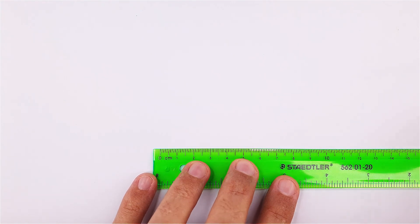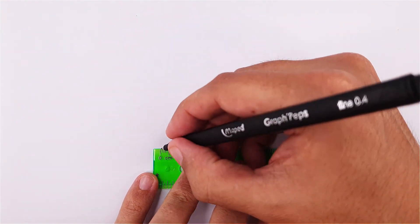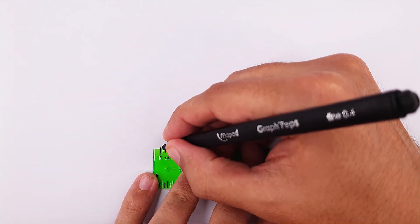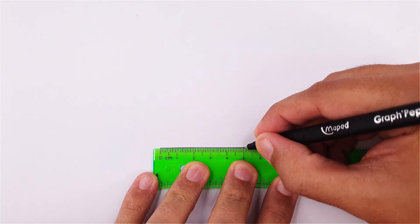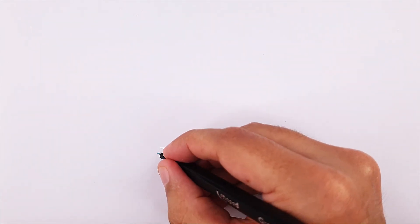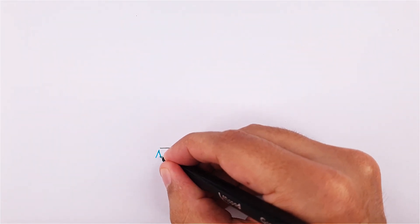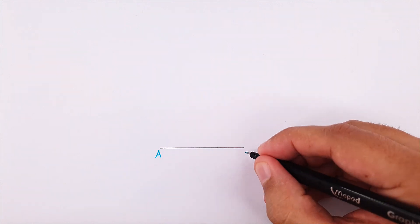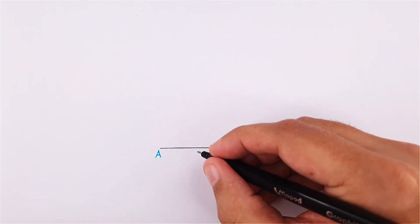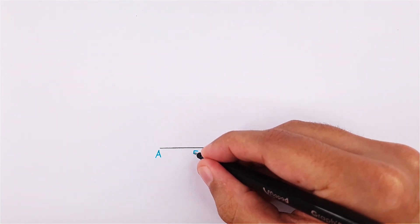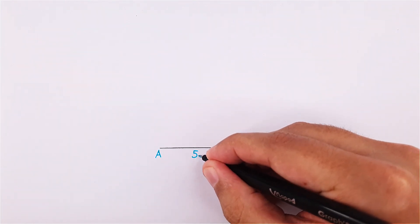In this video, we will construct an octagon. We can start by drawing our first side and labeling it as side AB. For this example, I will use a side length of 50 mm.